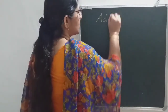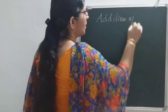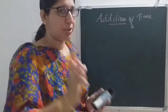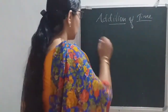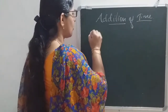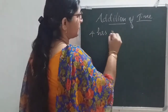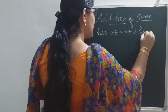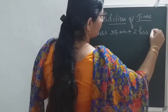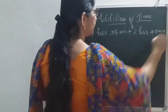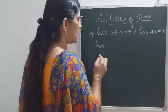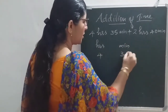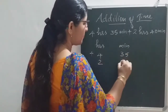Next is a very important topic — that is addition of time. The addition is very much the same as normal addition, but there is a small thing you have to keep in your mind. For example, one question: 4 hours 35 minutes plus 2 hours 40 minutes. First write hours and minutes: 4 hours 35 minutes plus 2 hours 40 minutes.